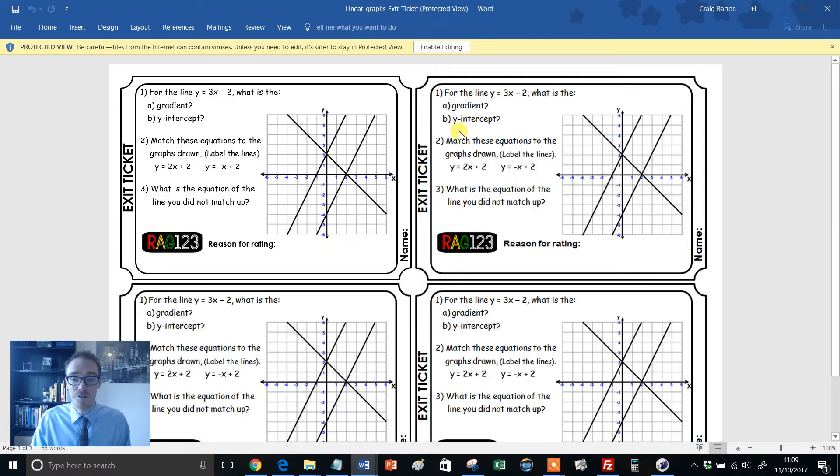Then we have a wonderful graph exit ticket. And this is even better for your photocopying budget - four per A4. So again, imagine you've taught linear graphs to your students. Last five, ten minutes of the lesson, cut this out, give each one of these to your students. Can they do them? Hand them back to you at the end. You have a quick glance over them the night after the lesson, and it helps inform your future planning of the next lesson.